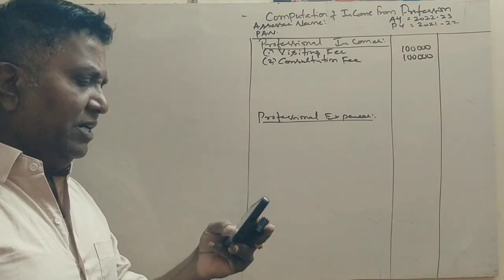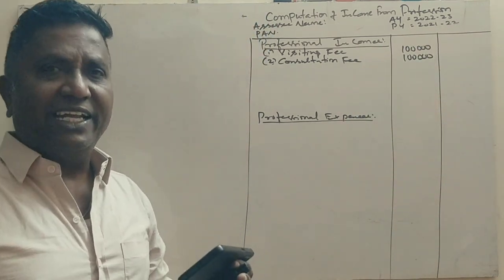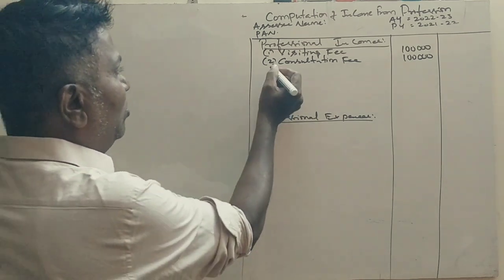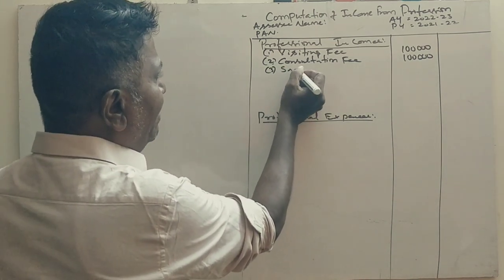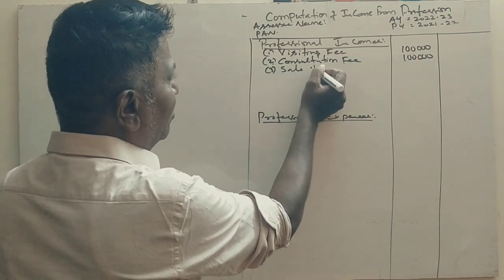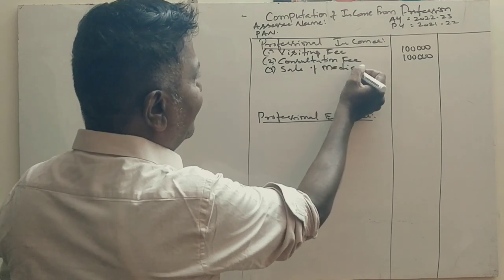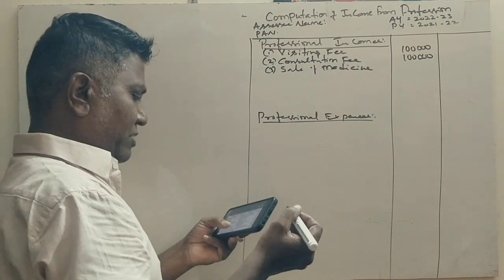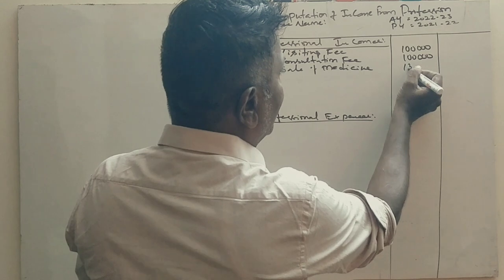Sale of medicine: when a doctor gives treatment and sells medicine along with it, that is professional income. So sale of medicine is one lakh thirty-five thousand rupees.